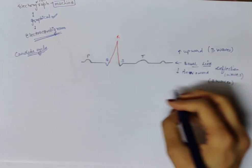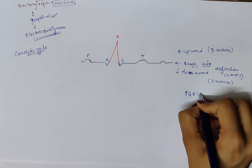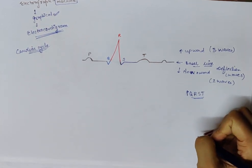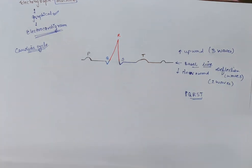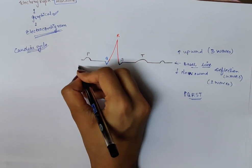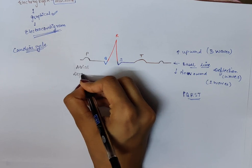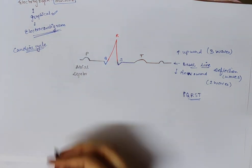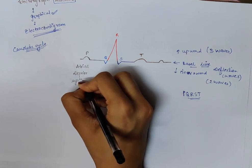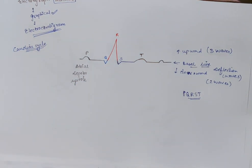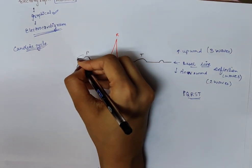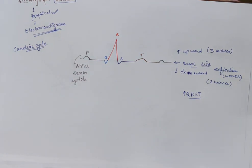These five waves are P, Q, R, S, and T. The first wave is the P wave. This P wave shows the atrial depolarization — or what we can say, atrial systole. Atrial systole or atrial depolarization is represented by the P wave.